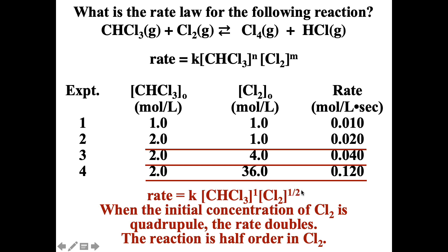So the rate equation has exponents one and one-half, determined from experimental data. Remember, exponents do not have to be integers — they can be positive, negative, or fractions. This reaction is first order with respect to the first reactant, half order with respect to chlorine, and the overall order is 1.5.